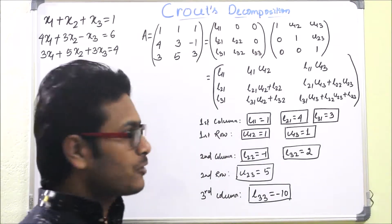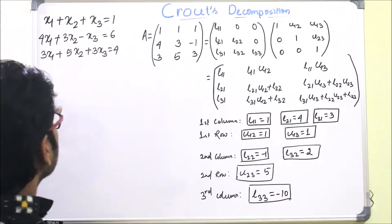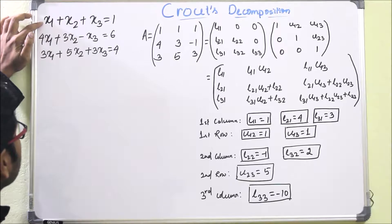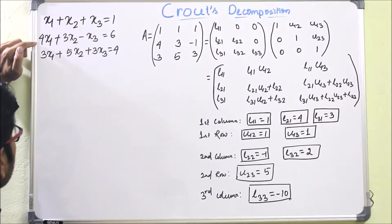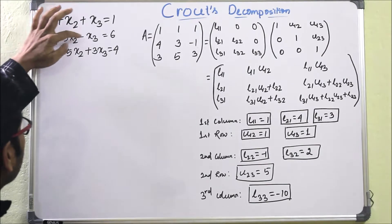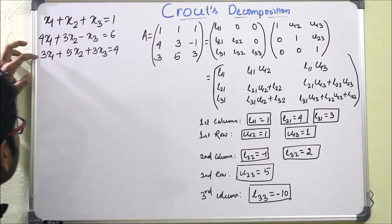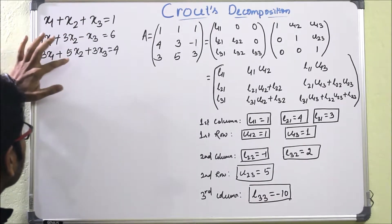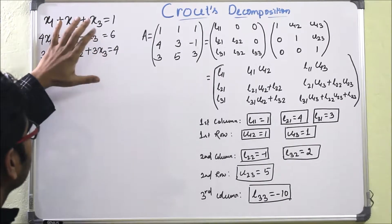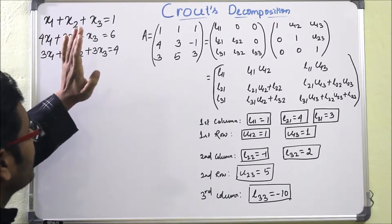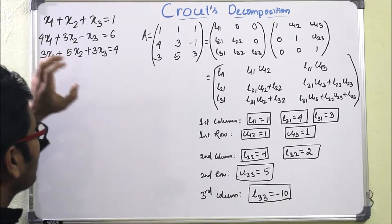So now let's start with a problem. The problem is: x1 + x2 + x3 = 1 (first equation), 4x1 + 3x2 − x3 = 6 (second equation), and 3x1 + 5x2 + 3x3 = 4 (third equation). We will solve this through Crout's decomposition method.